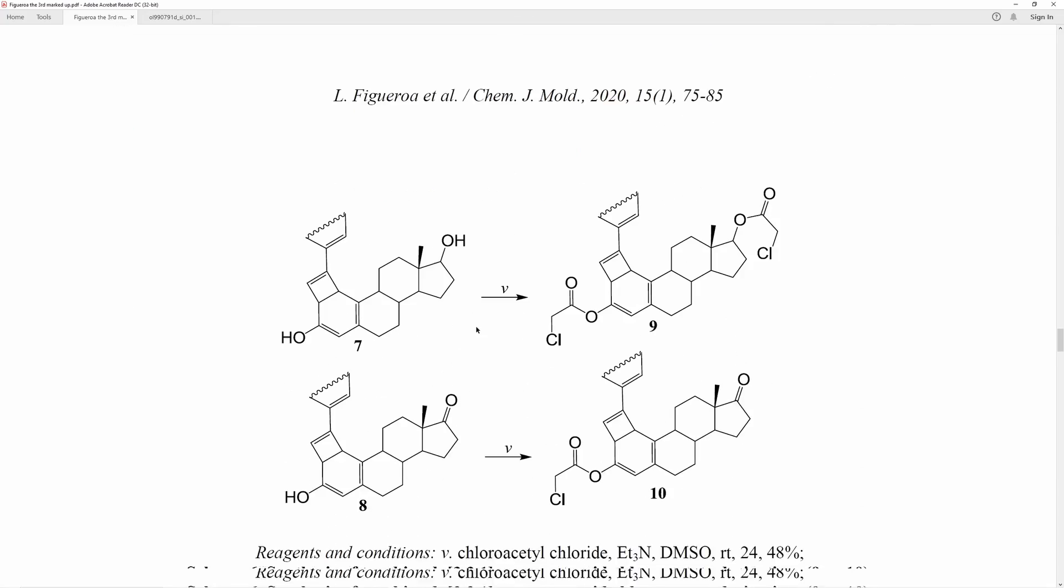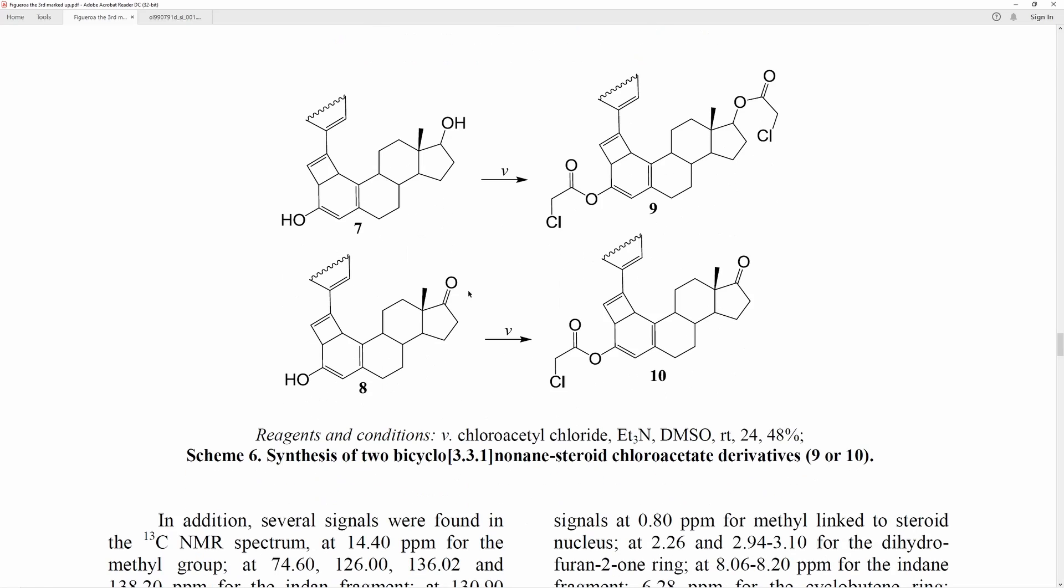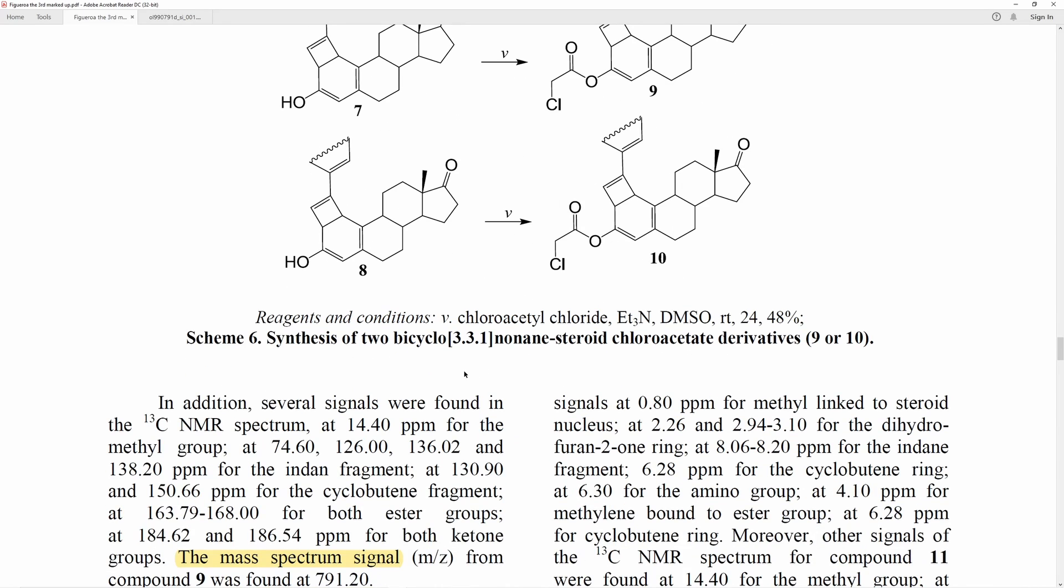It is noteworthy that the 1-HNMR spectrum for compound 9 showed signals at 0.8 ppm for the methyl group linked to the steroid nucleus. I don't think that that's noteworthy. If you had a methyl group before, I'm gonna hope you had a methyl group after. That's not that noteworthy. It's not noteworthy for me.